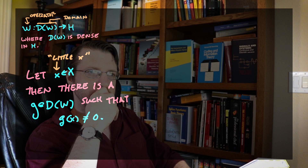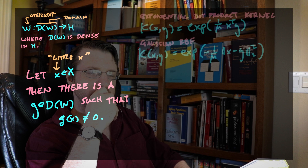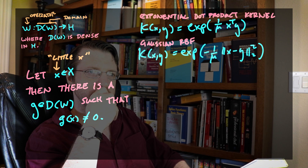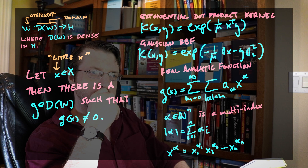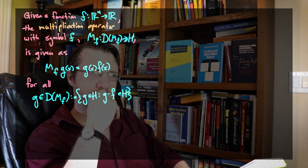The spaces we're going to be working over are the exponential dot product kernel and the Gaussian RBF kernel — generally, kernels corresponding to spaces of real analytic functions. What we're going to show is that the symbol of the multiplication operator, f, ends up being real analytic as well. Starting with multiplication operators, since this is a little bit simpler: if we take a multiplication operator with symbol f, that means we take some g from the domain of our operator and hit it with f by multiplication, so it's just g times f.